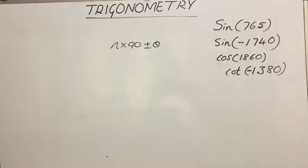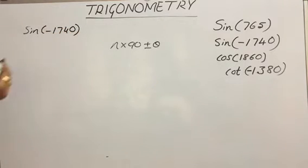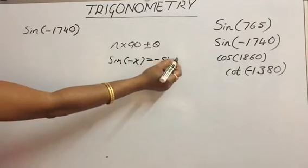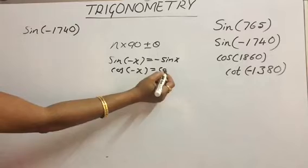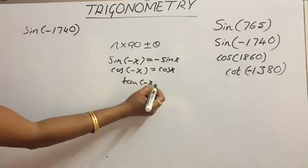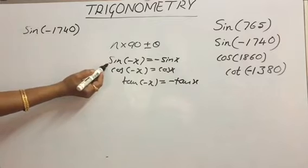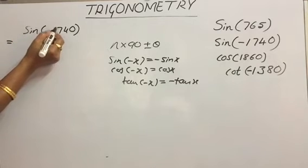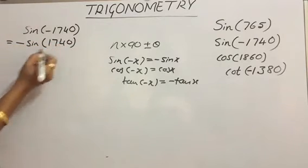Now let's consider the second value: sin(−1740°). Before dividing 1740 by 90, we should apply the rule: sin(−x) = −sin x; cos(−x) = cos x; and tan(−x) = −tan x. Applying sin(−x) = −sin x here, sin(−1740°) can be written as −sin(1740°).